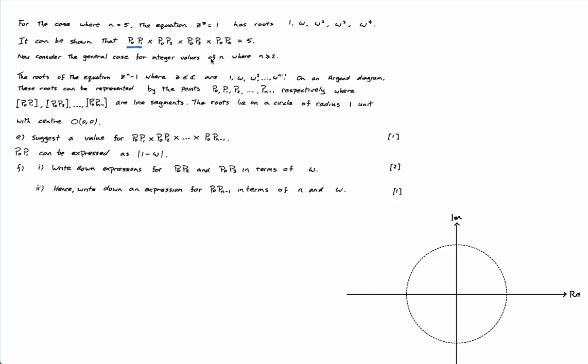So they then say, well imagine now we've got z to the n minus 1 with roots 1 to omega to the n minus 1. It just says suggest a value, so this isn't, I haven't proved anything, but I think it's a reasonable thing that we can guess on what this is going to be.